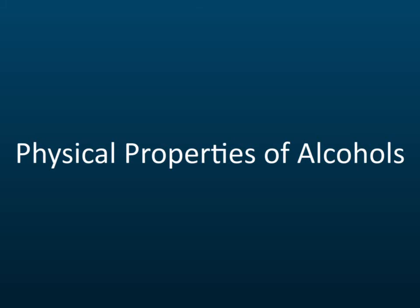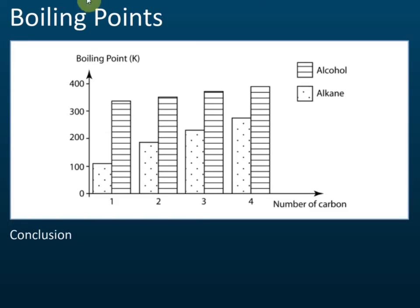Physical properties of alcohol. The first thing you need to know is the boiling points. Now, these are alkanes — methane, ethane, propane, butane — and these are the boiling points of alcohol.